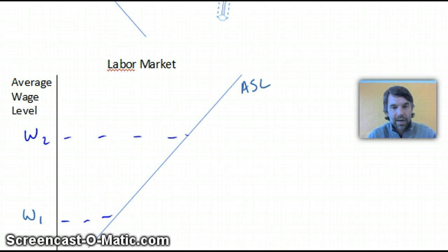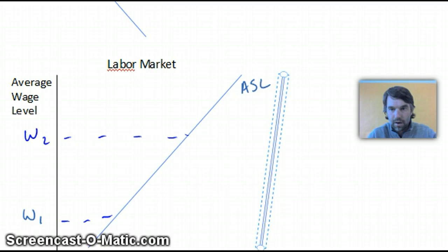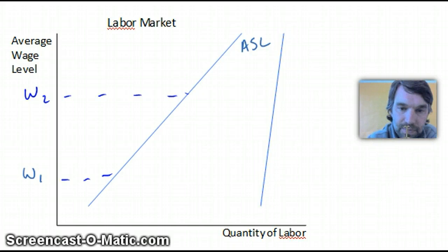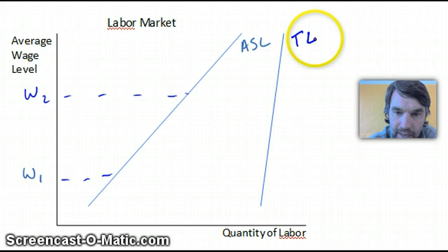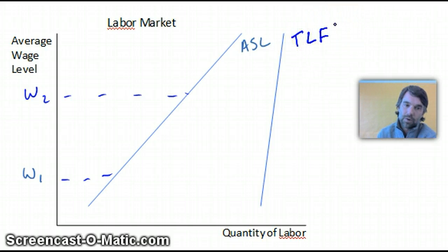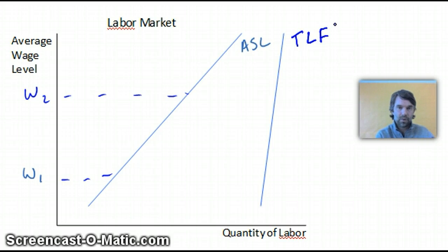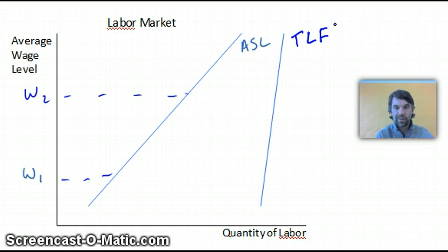Our second step is we're going to bring in another supply curve. Our immediate observations are that it's rather steep and that it's to the right of our ASL curve. This is what we call TLF — Total Labor Force. What this represents is the total amount of people in our economy who are willing to work and are actively seeking work at all wage levels. It is positively sloped — as wages go up, we see more people willing to work and actively seeking work.